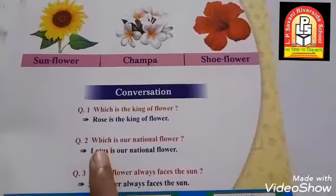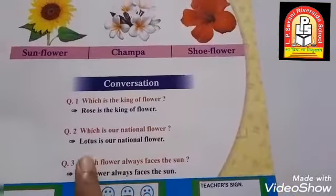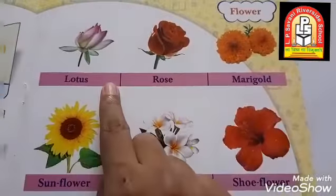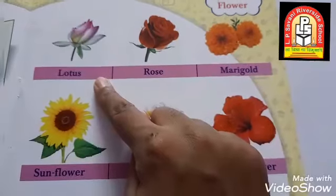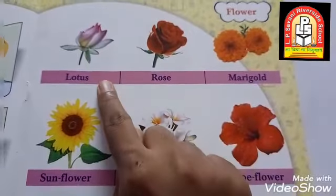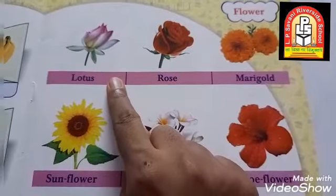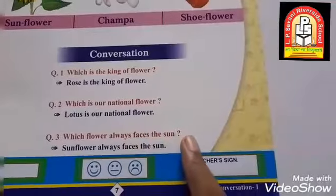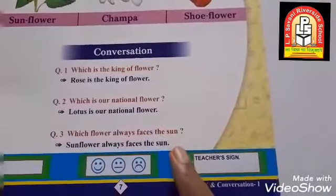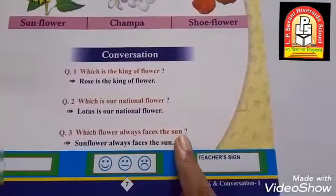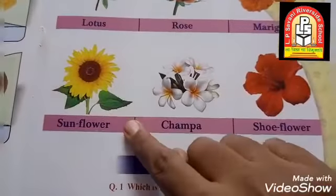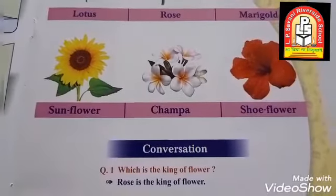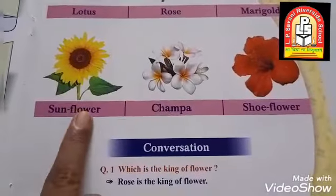My second question is: which is our national flower? Lotus is our national flower. My third question is: which flower always faces the sun? Sunflower always faces the sun.